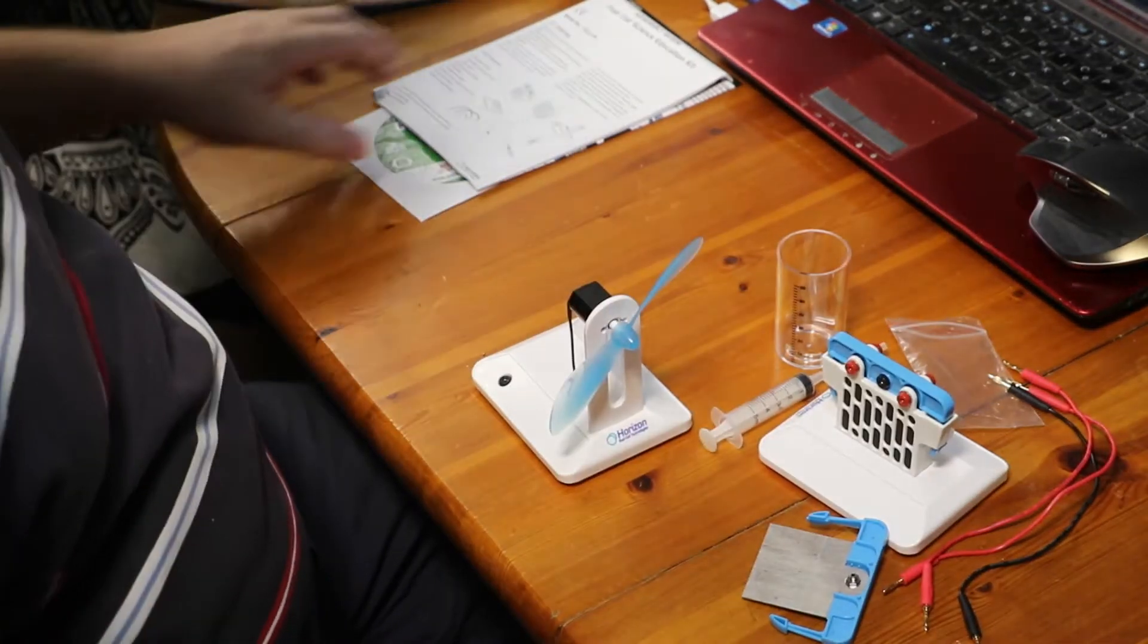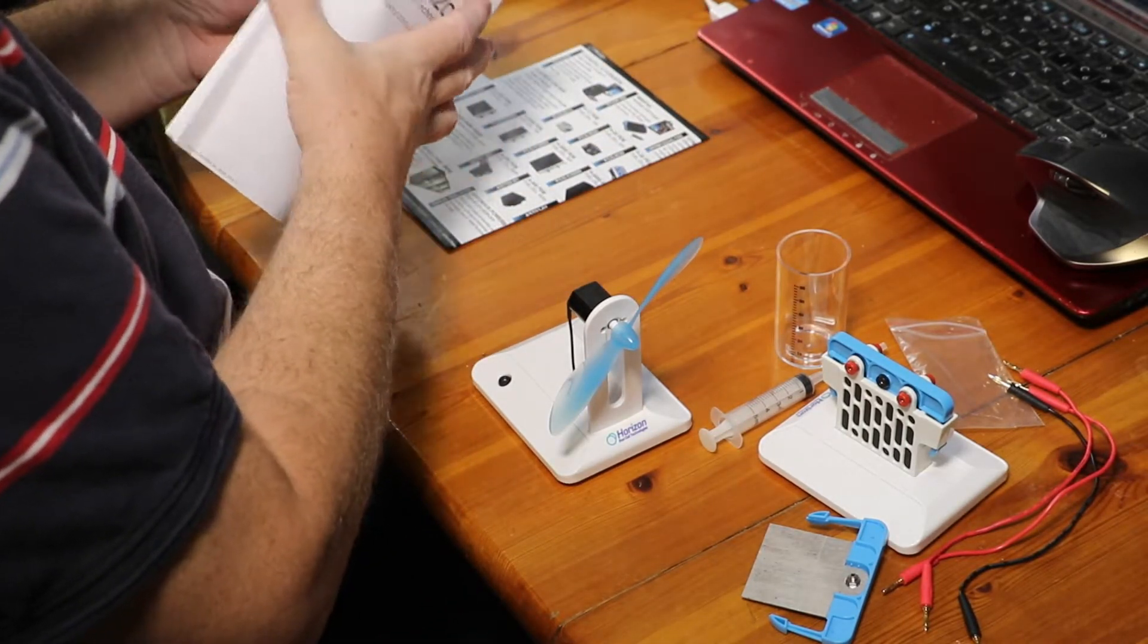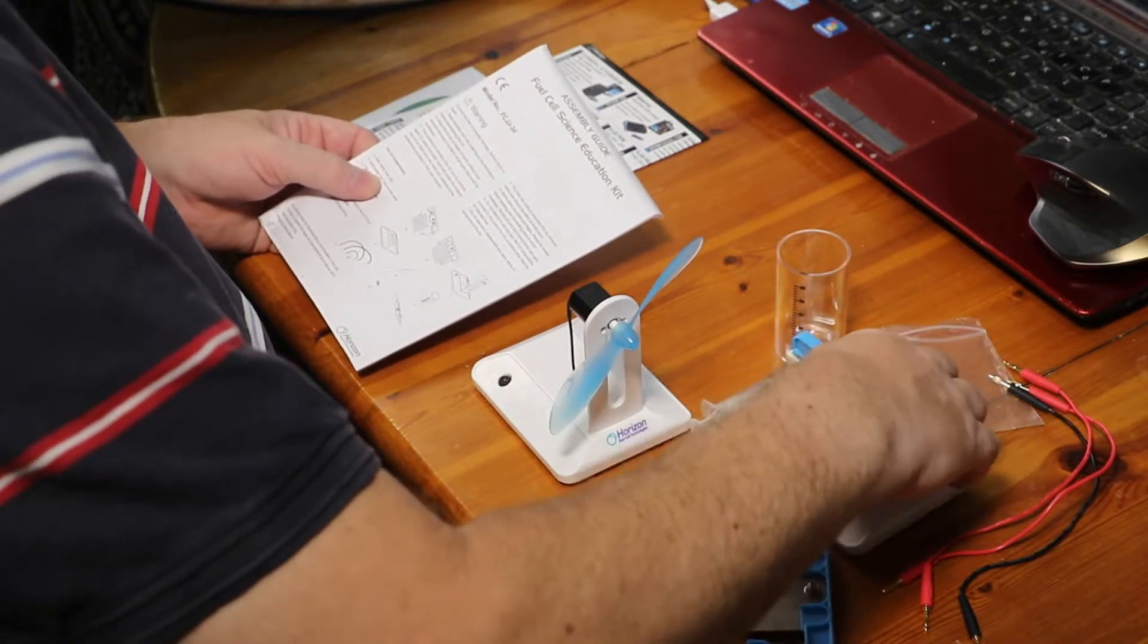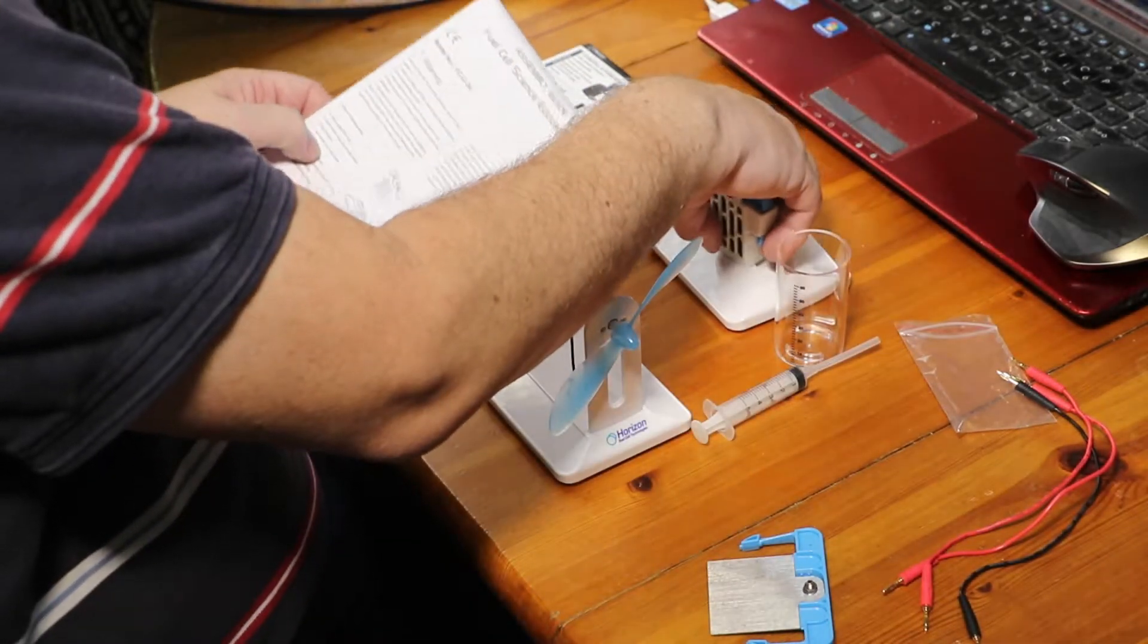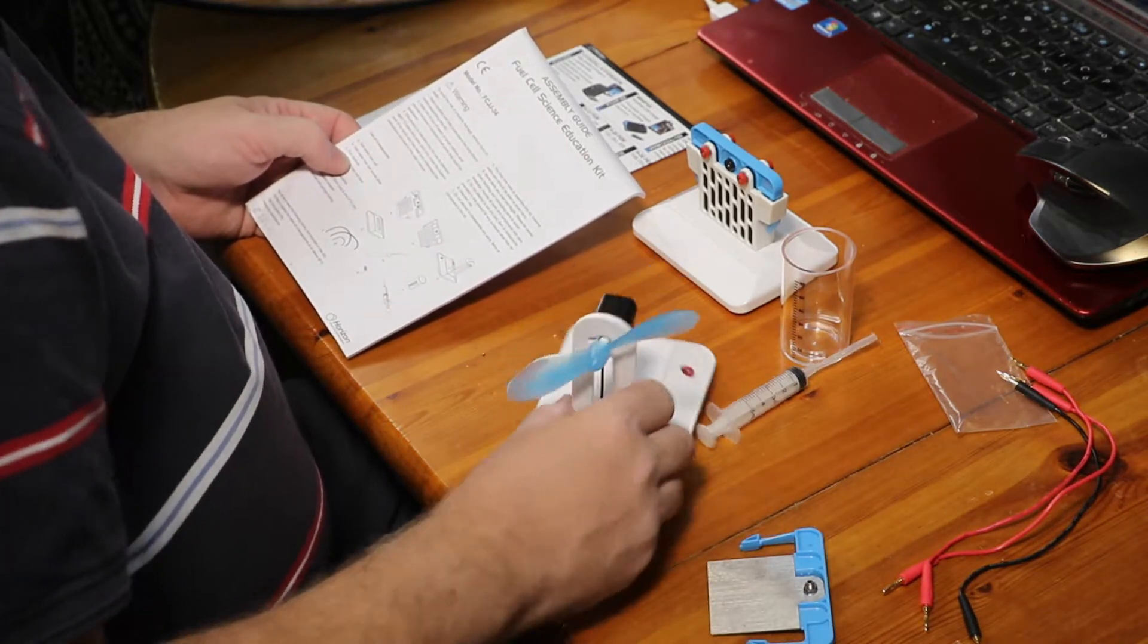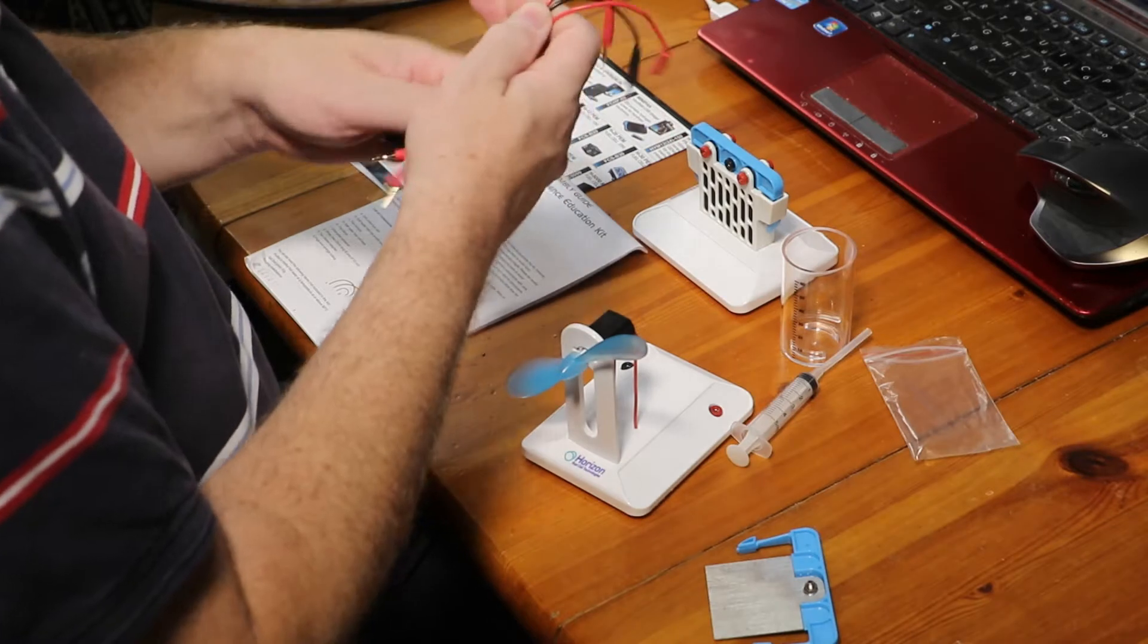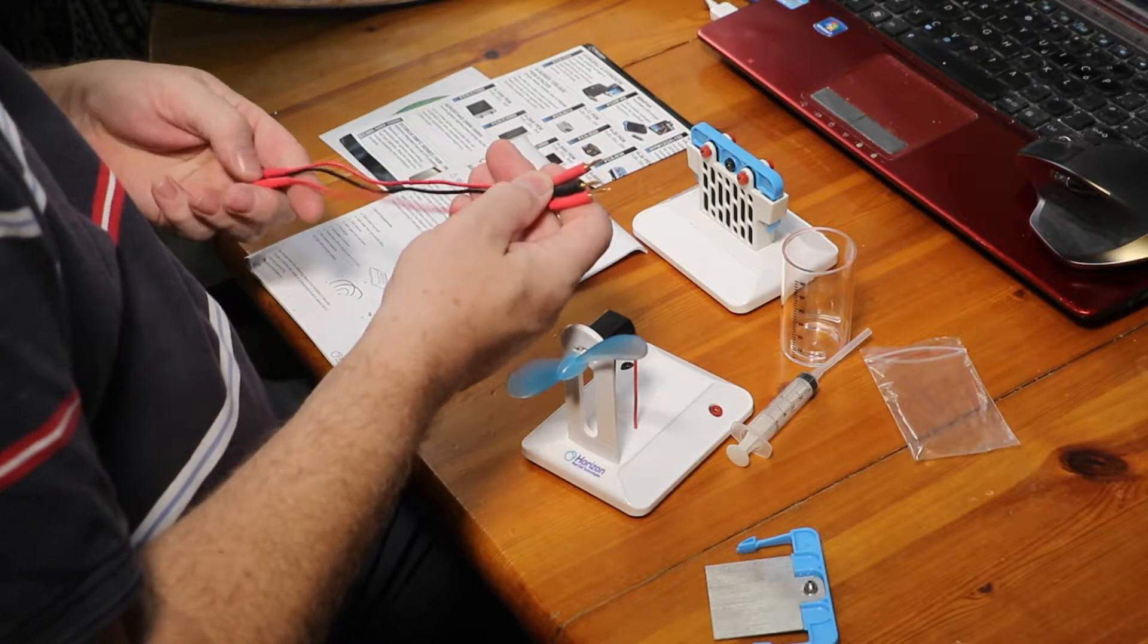Let's move that out of the way and have a look at the assembly guide. It tells me I've got the fuel cell, which is that one. We've got the saltwater fuel cell base, the fan module, the fan. So that's all the bits I want. It says I've got basically three leads, two 20 centimeters long and one 10 centimeter long. I have three the same length.